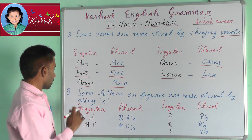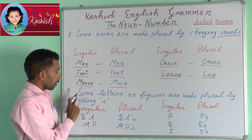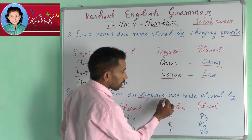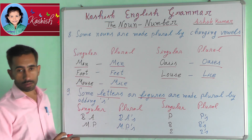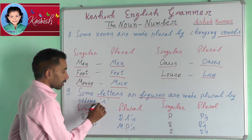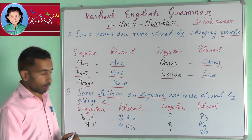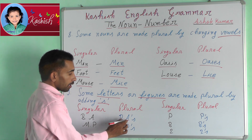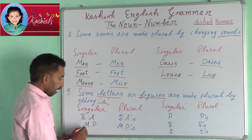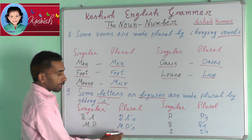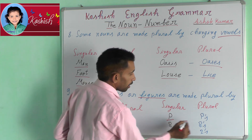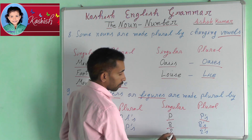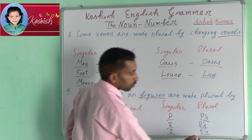Ninth rule: some letters or figures are made plural by adding S. For example: B → Bs, ABs, MP → MPs, P → Ps, two → twos.